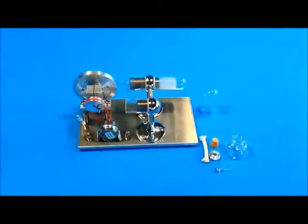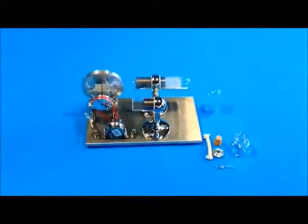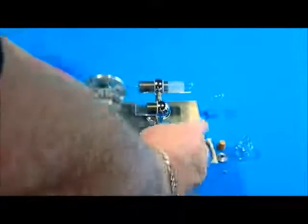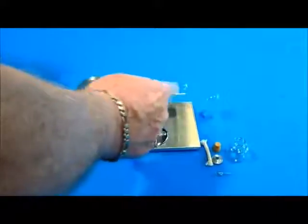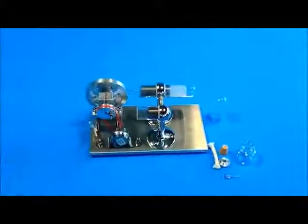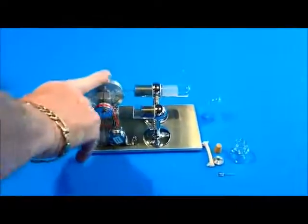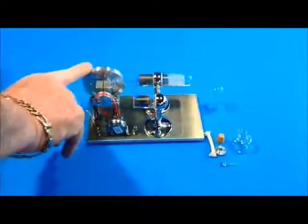The sterling engine is an external combustion engine where you burn a fuel with this wick and this bottle full of fuel. It heats this chamber here. This is the hot expansion chamber. The hot air inside of this expands, pushes the cylinder back.